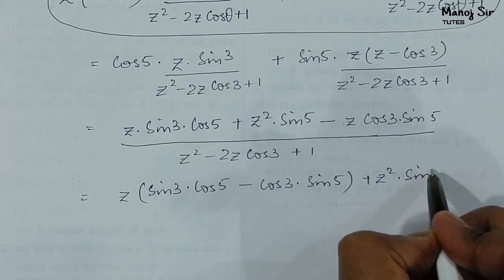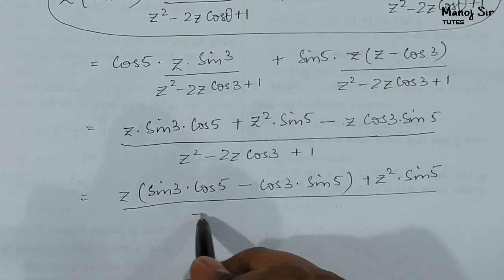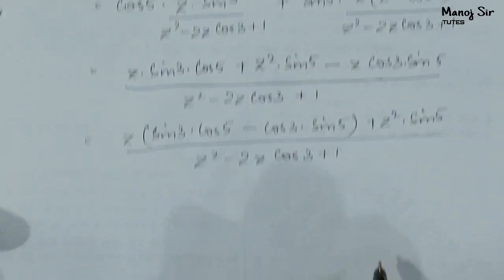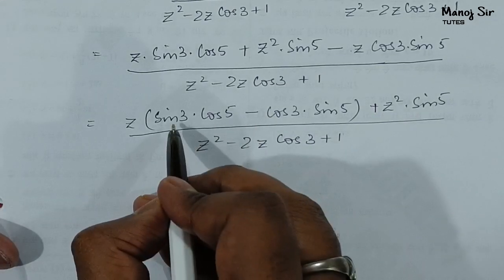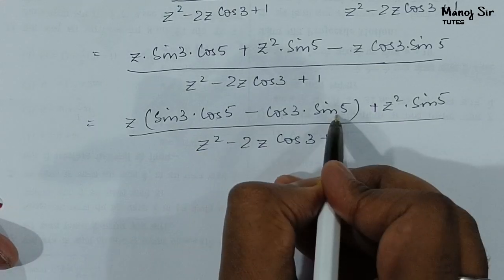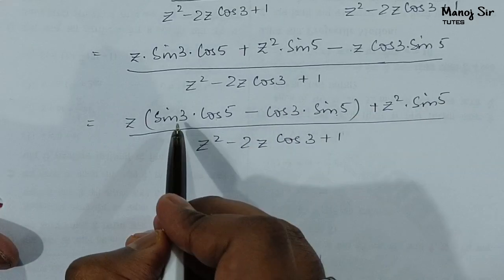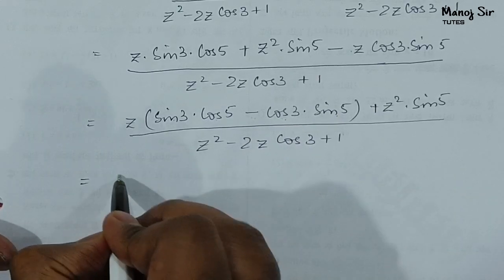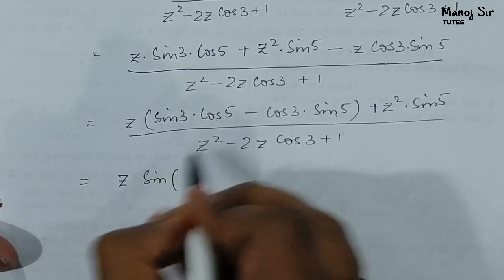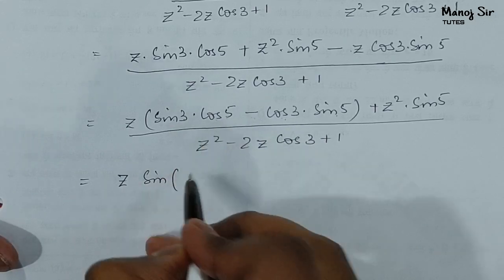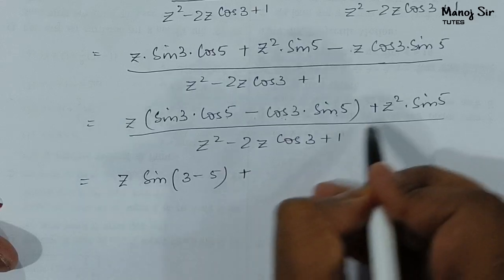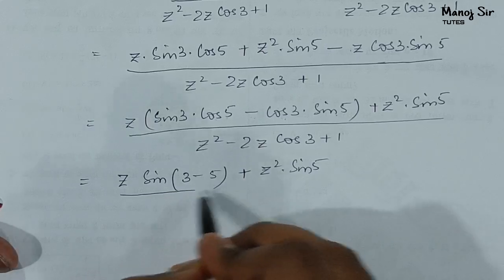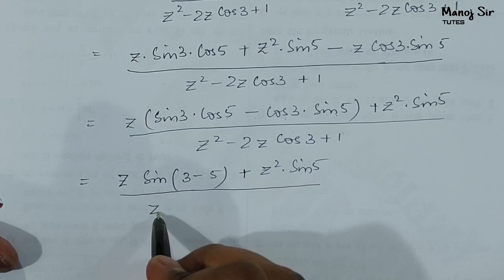Taking z common from the z·sin(3)·cos(5) and −z·cos(3)·sin(5) terms: z·[sin(3)·cos(5) − cos(3)·sin(5)], plus z²·sin(5), over (z²−2z·cos(3)+1). We recognize sin(3)·cos(5)−cos(3)·sin(5) as sin(3−5) = sin(−2).